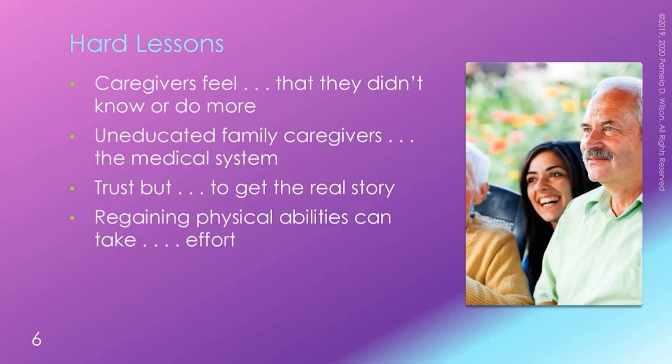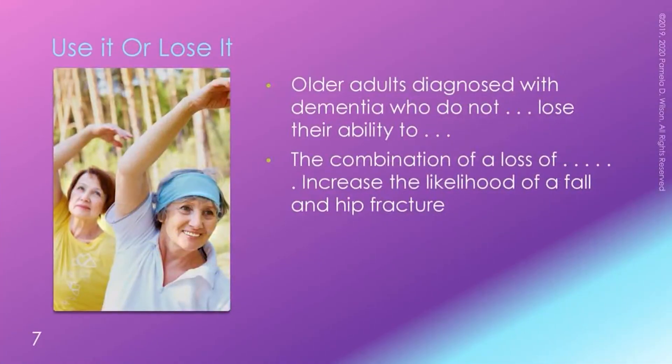It may take a lot of your time and effort to get your parent physically and actively engaged again. You can do it, but it's a choice. What are you willing to do? What is your elderly parent willing to do? Walking is a use-it-or-lose-it proposition, as is physical activity, muscle strength, and everything that relates to our body. Older adults diagnosed with dementia who don't walk on a regular basis eventually lose the strength and the ability to walk.